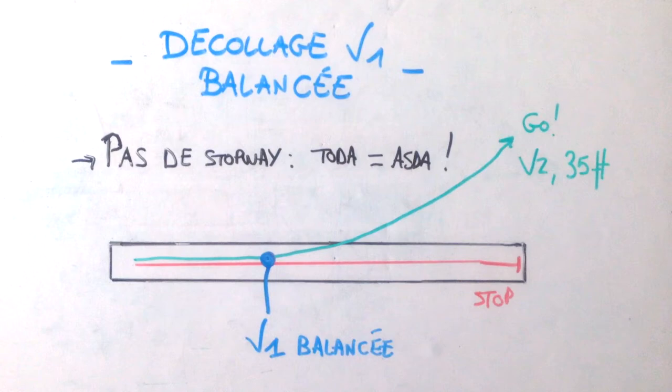In fact, we will not have a range of V1, we will have a V1 unique, and we will choose the way to make our takeoff distance and our stopping distance exactly the same. The takeoff distance is to reach 35 feet at V2, and the stopping distance is to reach the stopway. These two distances, the takeoff distance required and the accelerate-stop distance required, must be the same, and we need to find a V1 equilibrant to have the same TODR and ASDR.